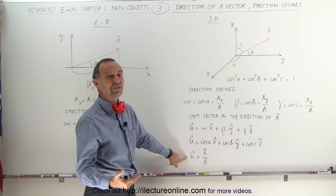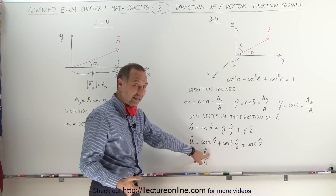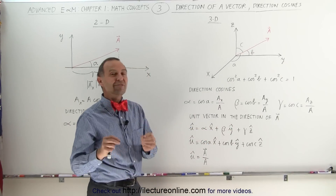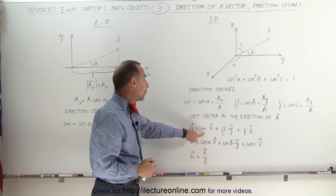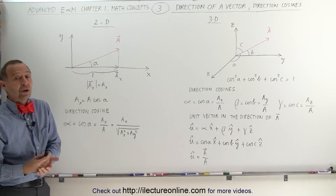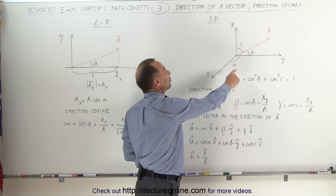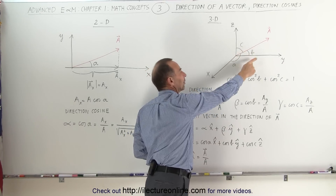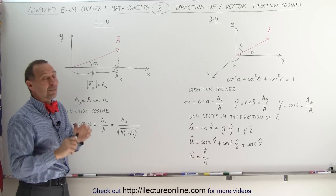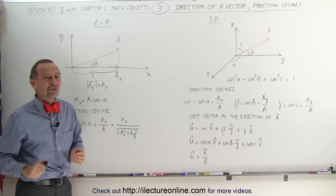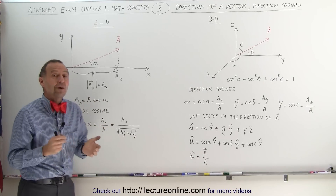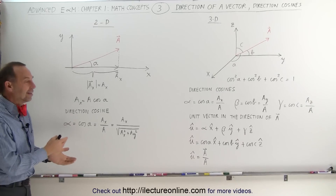Ultimately, we can define the unit vector as vector A divided by its magnitude. This is an important concept: we can always easily find the direction of any vector when we express it in terms of direction cosines. To find them, you need to know the angle between the vector and each axis. If you can't remember how to find those angles, future videos will show you how. At this point, you have the concept of the direction of a vector and the direction cosines.